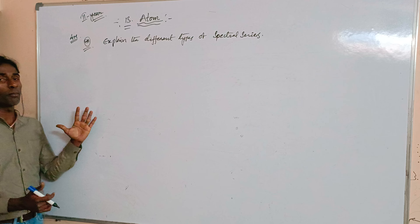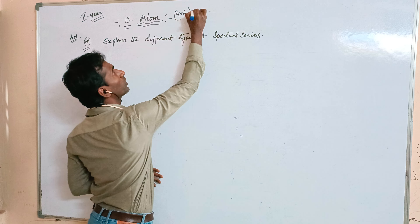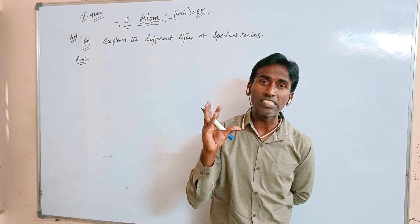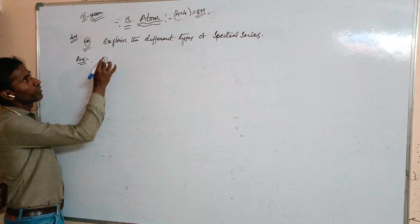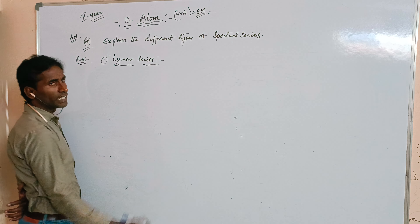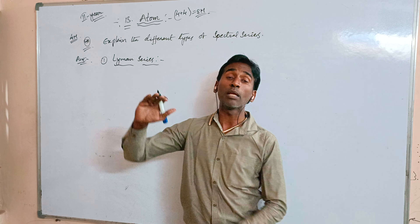Another question is: explain the distance of closest approach and impact parameter. Another question is: write a short note on de Broglie's hypothesis and Bohr's postulates. Also there is a question on the drawbacks of Rutherford's model. These are the five most important questions from this chapter — you will get two four-mark questions, total eight marks from this chapter.